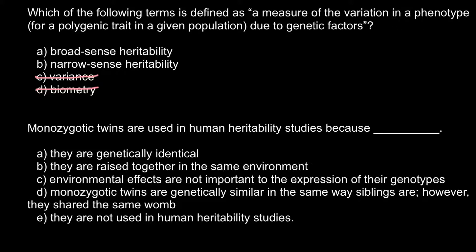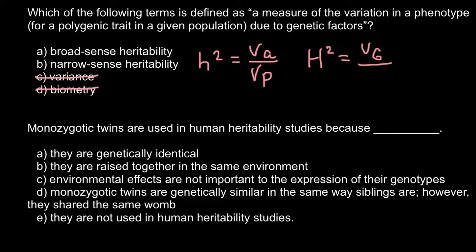Here are the two formulas for both these terms. Narrow sense heritability is h² (small) equals variance additive divided by total phenotypic variance. And broad sense heritability is H² (capital) equals variance genetic divided by total phenotypic variance.